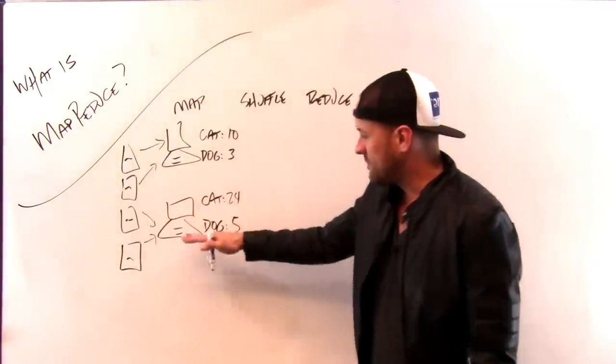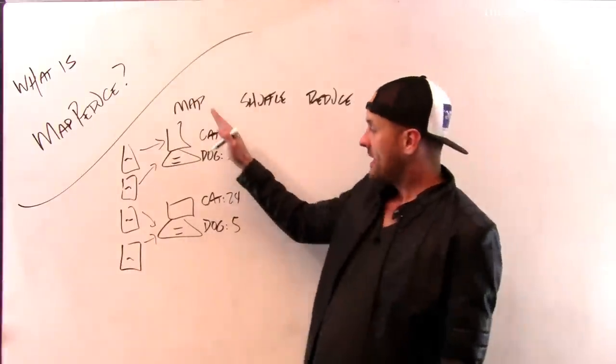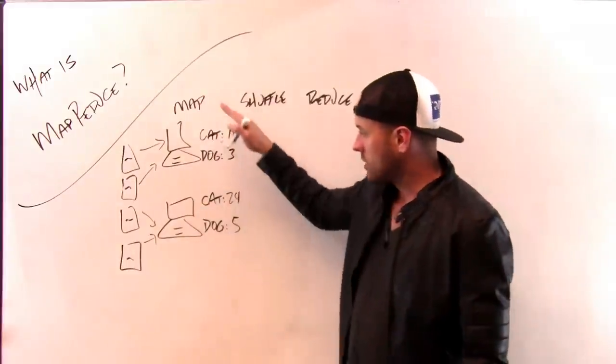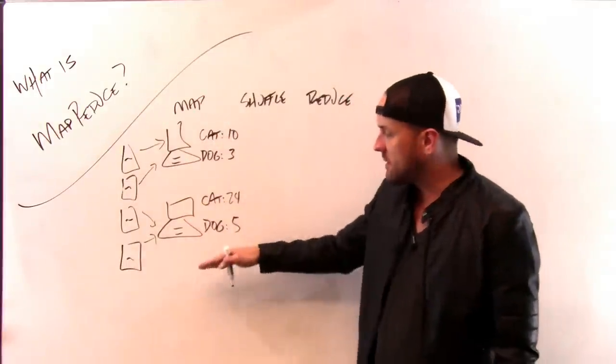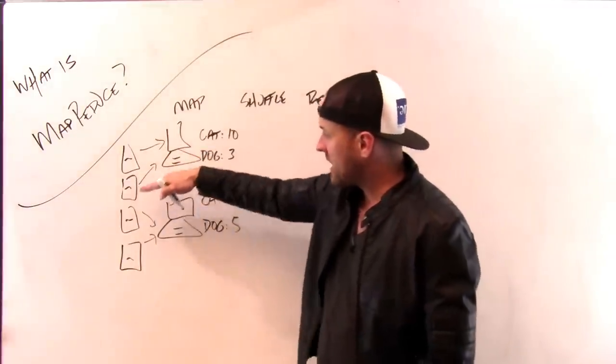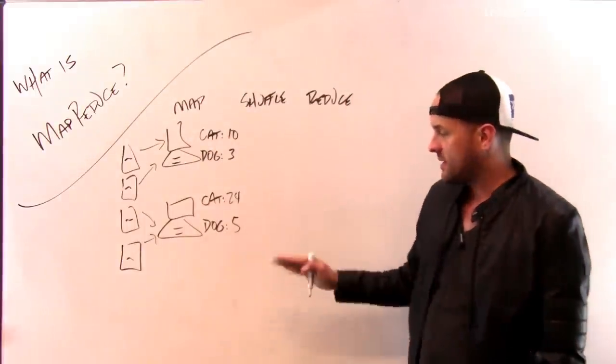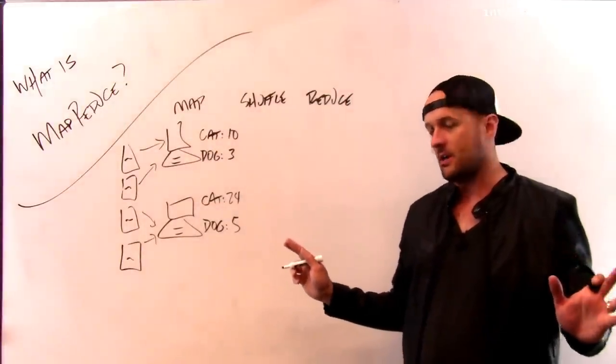These are computed by these computers. And again, the nice thing about the map phase, or the way the map phase has to be set up, is there's no communication between these machines that's allowed during the map phase. The machine just processes the documents it's given. If I have a hundred thousand documents and a hundred thousand computers, each computer processes one document.